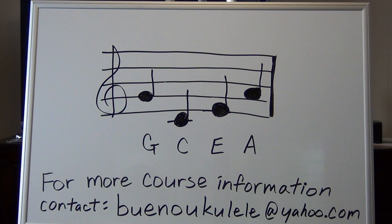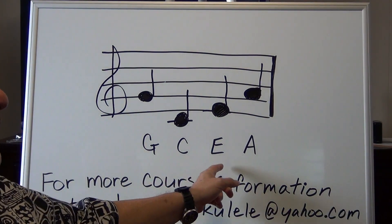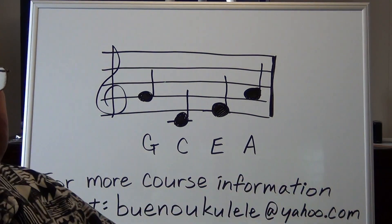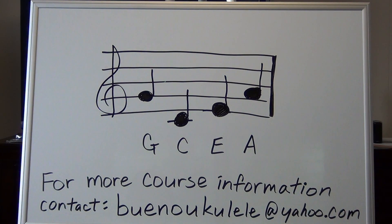If you see on the board behind me, you see the letters G C E A. Those are your open strings of ukulele, and every time you tune your ukulele you have to tune them to these notes: G C E A.